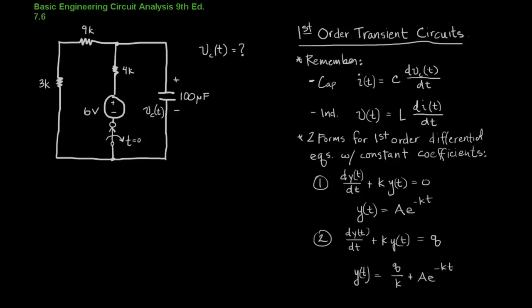If the equation does not equal zero, if it equals some other constant number then the answer will take on this form. And a will not be simply solved by using the initial conditions. You will use the initial conditions but a will not be exactly the initial conditions. We'll look at that example perhaps in another problem.